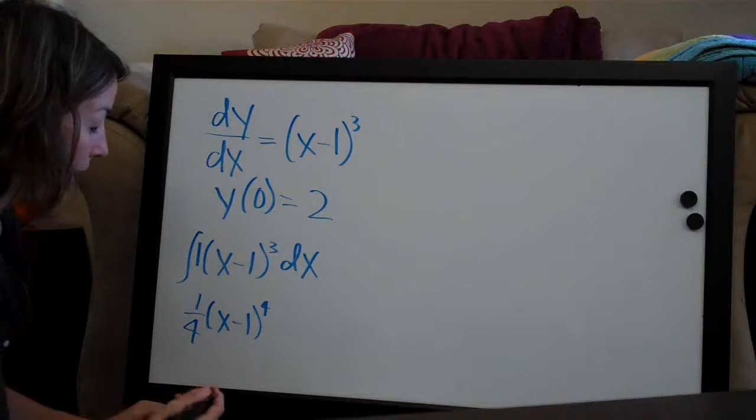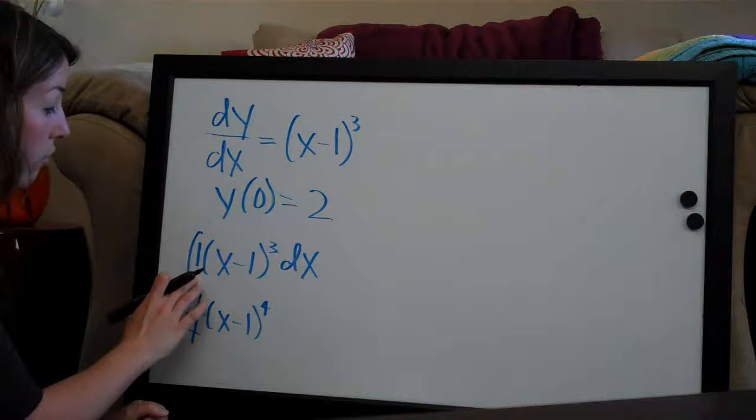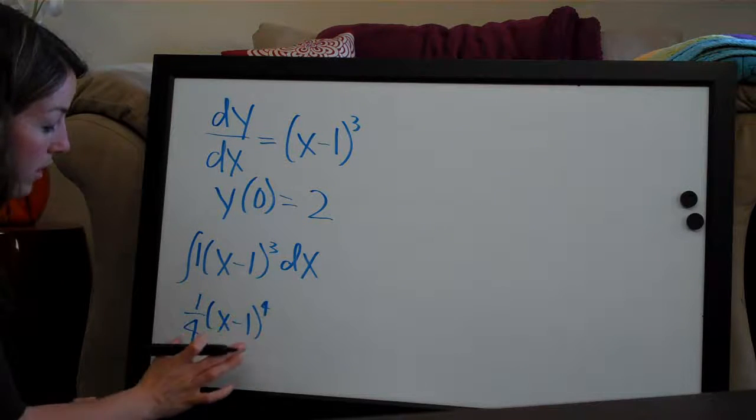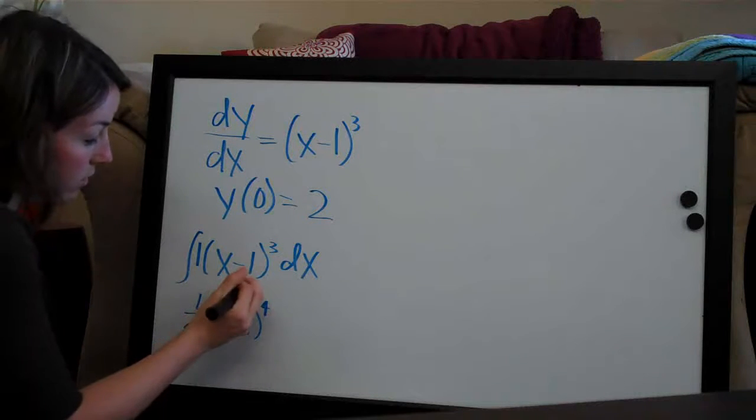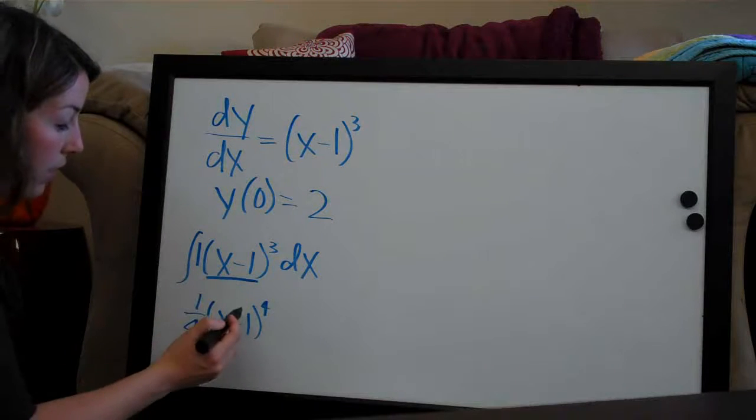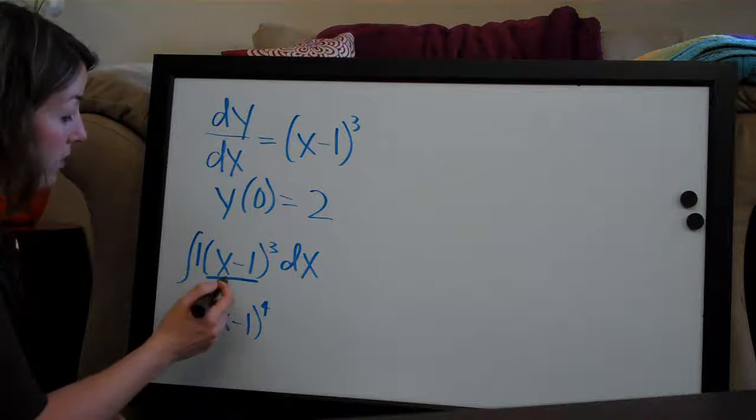So one-fourth, and then when we're taking the integral in this way using chain rule, we do the outside which we did the exponent here and the coefficient, but then we have to deal with the inside here and divide this whole thing by the derivative of the inside.